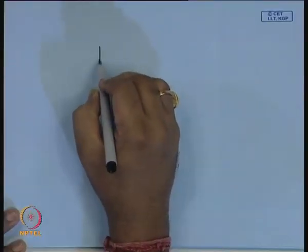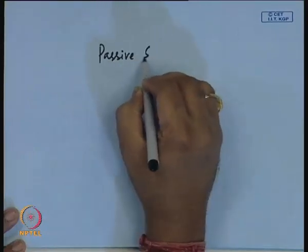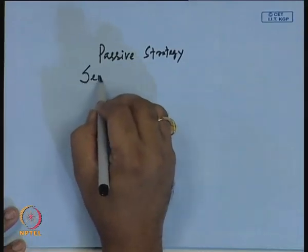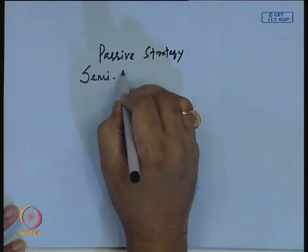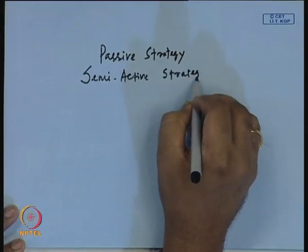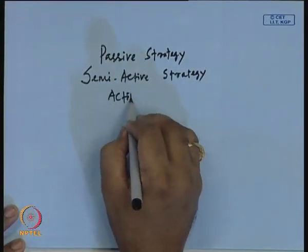In the previous class, we discussed the different types of bond portfolio strategies. There are three types: the passive bond portfolio management strategy, the semi-active strategy, and the active strategy. These are the three types of strategies used for bond portfolio management.